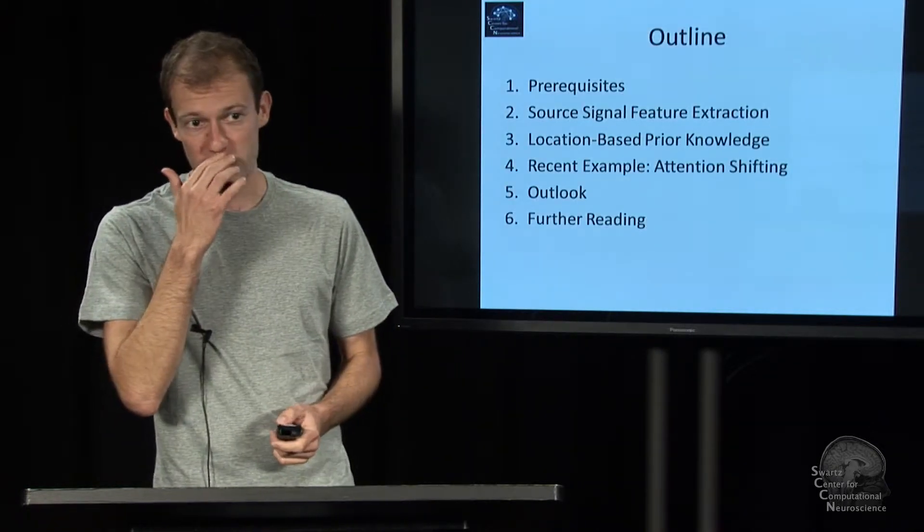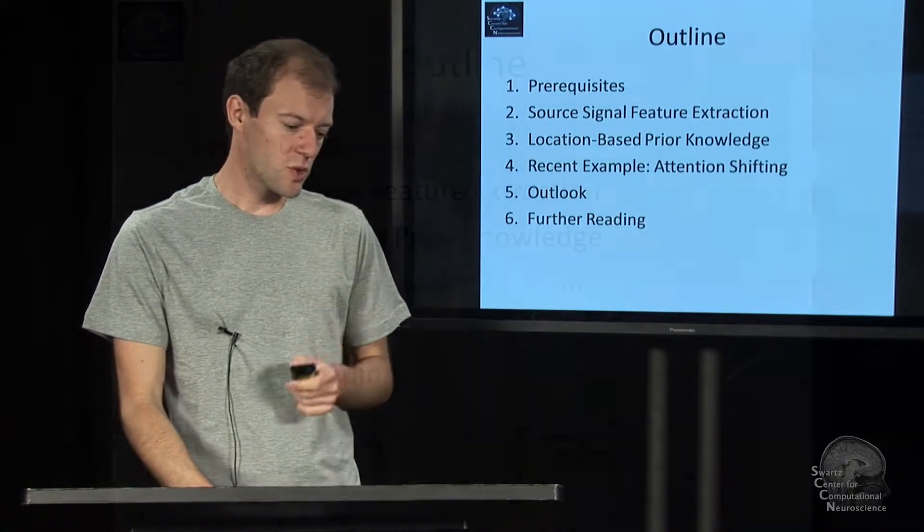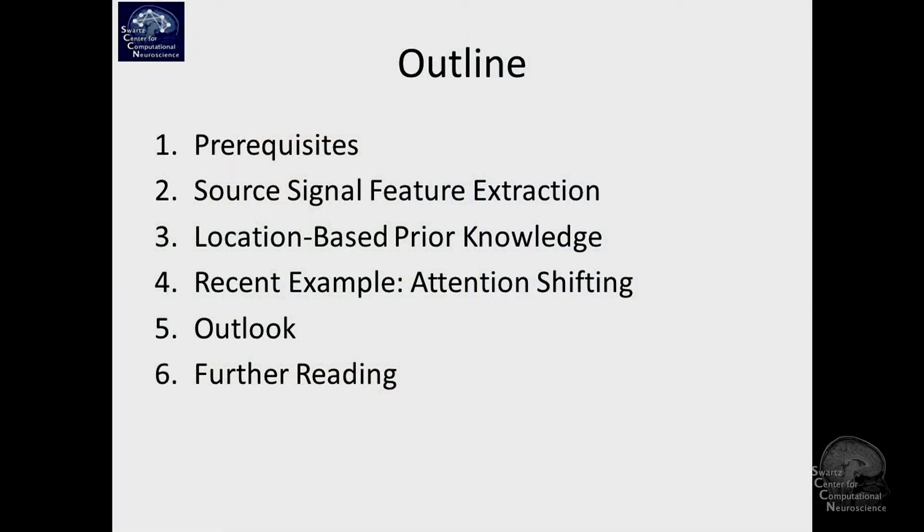So there's six modules. Some of them are a little bit short. And the first one is just some prerequisites on the idea of this neuroscience viewpoint in the BCI problem.